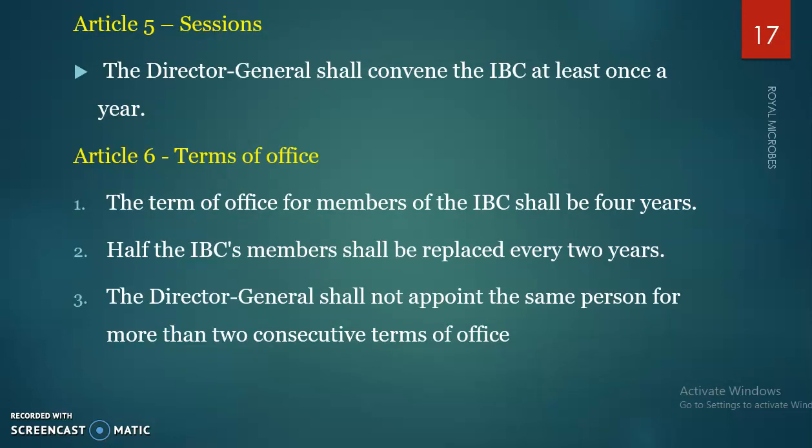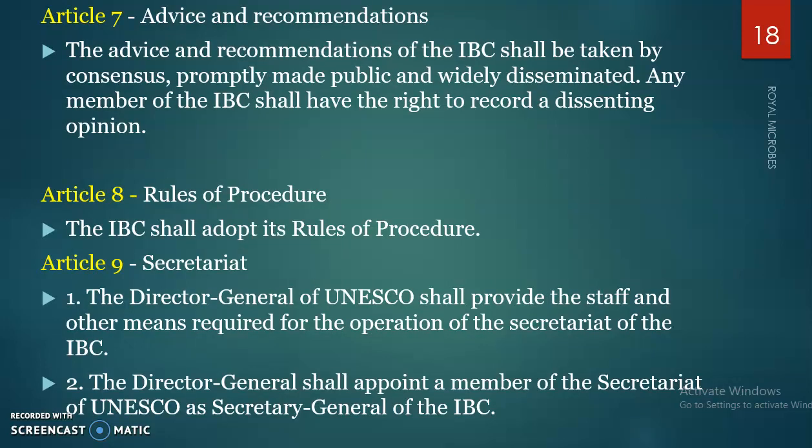Article 5 deals with the Director General convening the IBC at least once a year. Article 6 covers terms of office: the term of office for members of the IBC shall be four years, with half the IBC members replaced every two years. The Director General shall not appoint the same person for more than two consecutive terms. Article 7 deals with Advices and Recommendations: advice and recommendations of the IBC shall be promptly made public and widely disseminated, and any member of the IBC shall have the right to record a dissenting opinion.